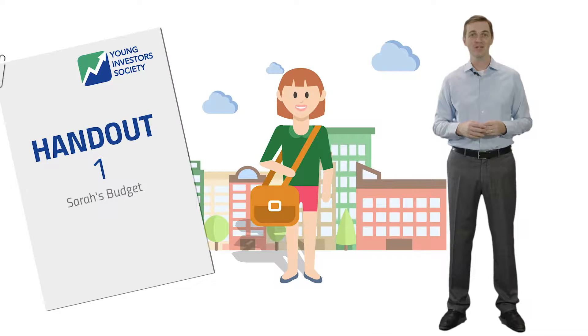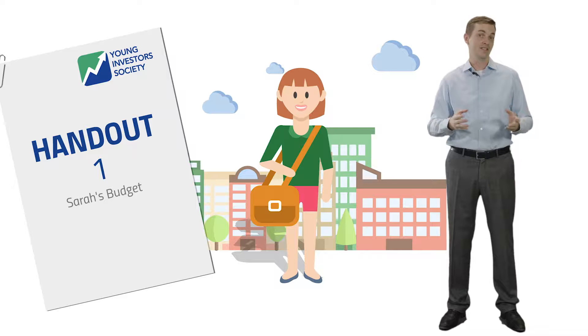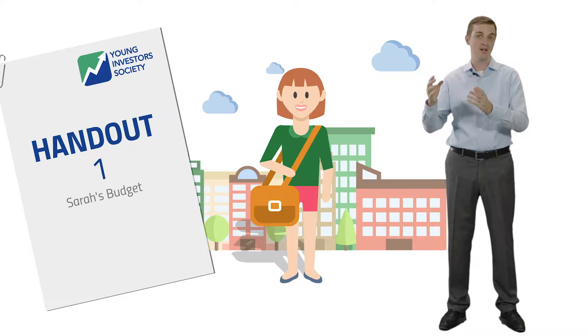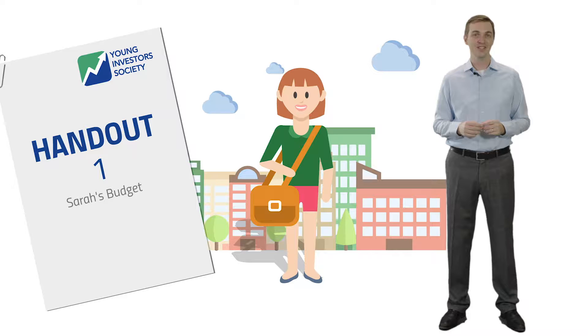How did you do on Sarah's budget? Were you able to find ways to make her cash flow positive? What were some of the expenses that you were able to eliminate? Maybe it was the entertainment, the food expense, maybe it was the cell phone bill. Were you able to find ways to increase her income? Maybe it was a side job, as she's newly graduated from college, or a career with more income, or reducing her housing bill or utilities? These are the key issues you will face when managing a budget and trying to become cash flow positive.